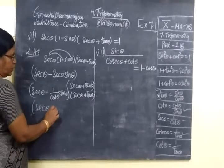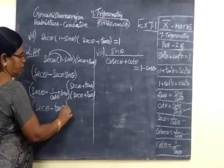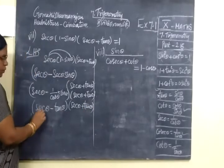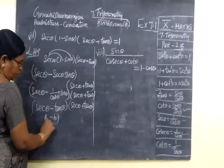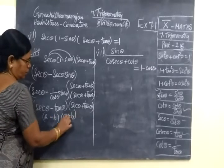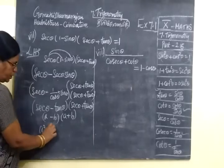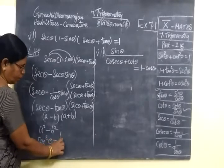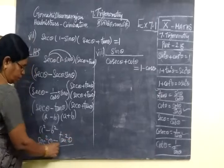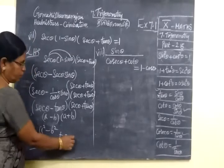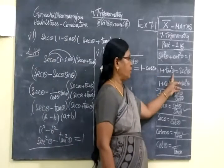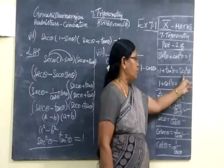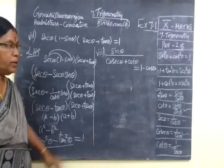So we write (sec θ - tan θ)(sec θ + tan θ). This is of the form (a - b)(a + b), and the formula gives a squared minus b squared. So this can be written as sec squared θ minus tan squared θ. This is nothing but 1, because the identity is 1 plus tan squared θ equals sec squared θ, so sec squared θ minus tan squared θ equals 1.